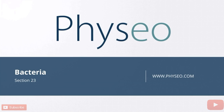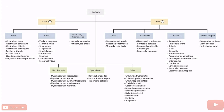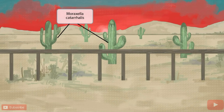Welcome to section 23 of Bacteria. This is our bacteria overview figure, and in this video we'll be discussing Moraxella catarralis, which you can see right here. This scene will take place out in the desert near some cacti. Cactus sounds kind of like catarralis, so we've shown several cacti in the image to help you remember that this image is about Moraxella catarralis.